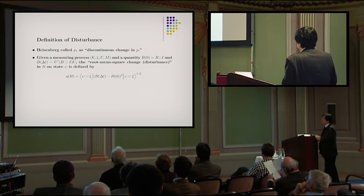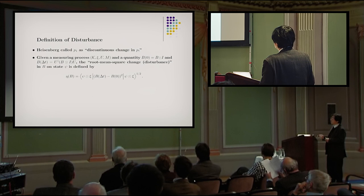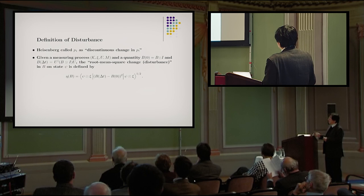Now we define disturbance. Heisenberg called P1 the discontinuous change of P. We define this to be the root mean square of the difference between B₀ and B(Δt), so the root mean square change is defined obviously in this way.